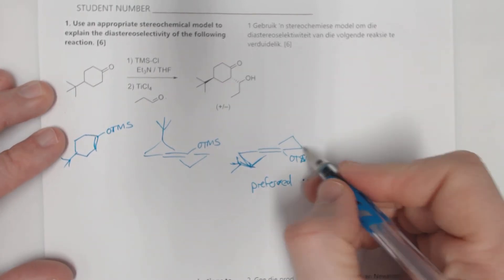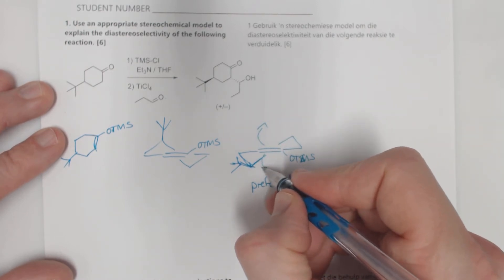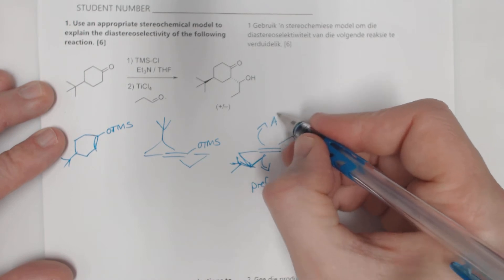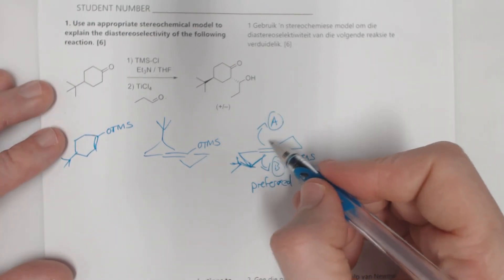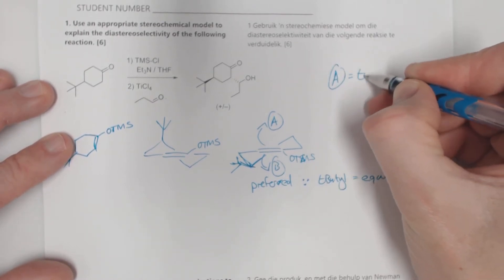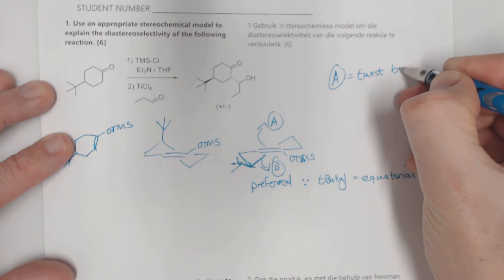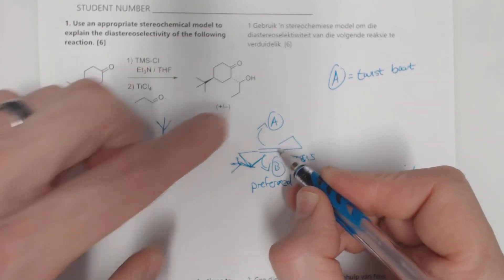So this one over here is preferred because t-butyl equals equatorial. And then we have to analyze when this reacts with the electrophile. A number of people also kind of said with the nucleophile, and there's two options, either going to A or B.